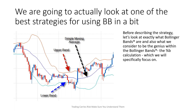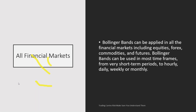Bollinger Bands consist of three simple lines. We start with the moving average line, and from there we have the upper band and the lower band, which are based on standard deviation. Standard deviation is a very complex mathematical formula which you don't have to learn. Fortunately, Bollinger Bands is so popular that almost every chart system will automatically apply it.